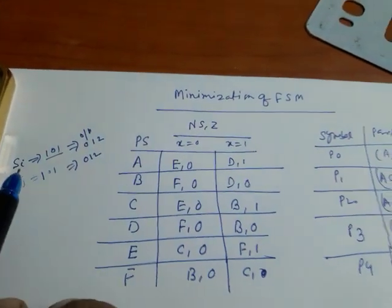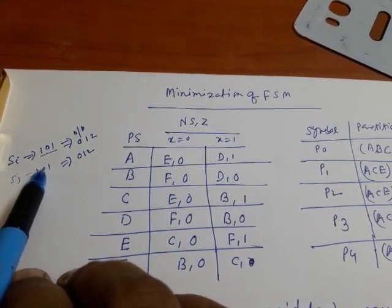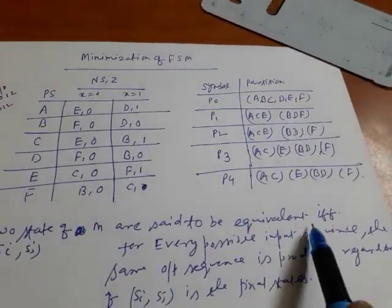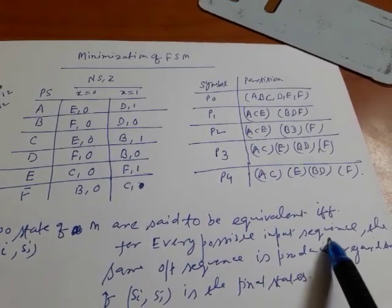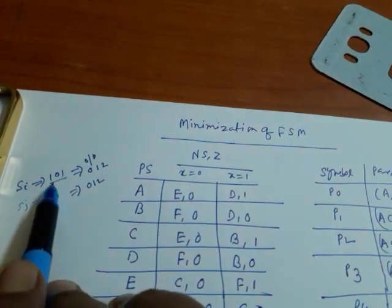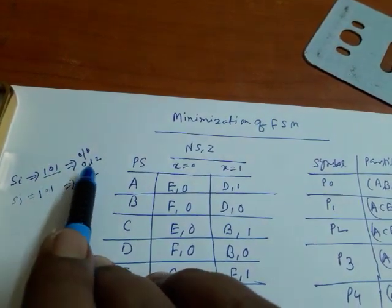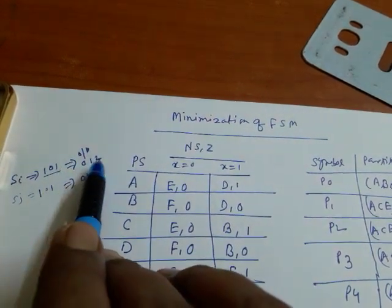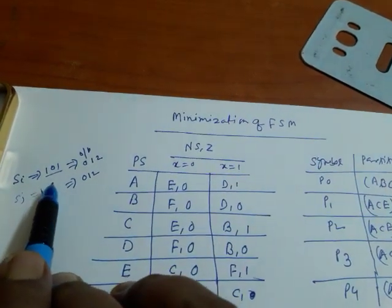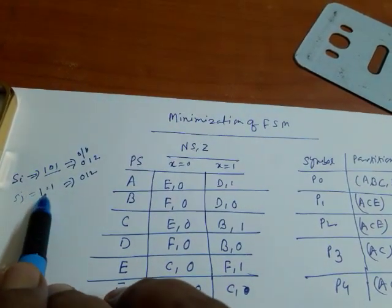Suppose I have taken two states si and sj and applied the same input sequence, say 1, 0, 1. It is saying that if and only if for every possible input sequence the same output sequence is produced — for example, applying 1 gives output 0, applying 0 gives output 1, applying 1 gives output 2 — then these two states are equivalent.